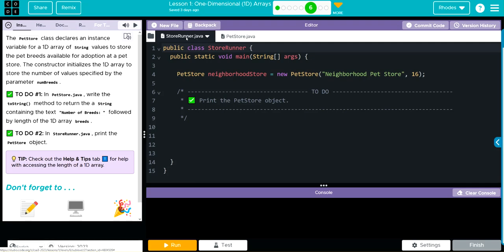The constructor initializes the 1D array to store the number of values specified by the parameter. In PetStore.java, we're going to write the toString method to return a new string containing the number of breeds followed by the length of the 1D array of breeds.